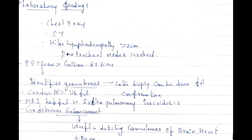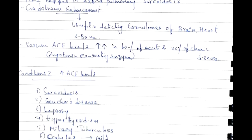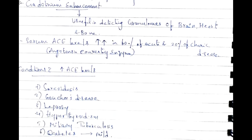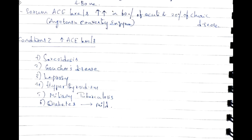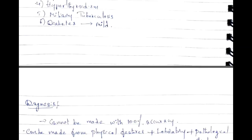Laboratory findings: chest X-ray and CT show hilar lymphadenopathy greater than 2 cm with paratracheal node involvement. PET scan is very useful for identifying granulomas — more useful than gallium-67 scan. Cardiac PET is useful; MRI is helpful for extra-pulmonary sarcoidosis. Gadolinium enhancement detects granulomas in brain, heart, and bone. Serum ACE (angiotensin-converting enzyme) levels are increased in 60% of acute and 20% of chronic cases. ACE levels are also elevated in Gaucher's disease, leprosy, hyperthyroidism, miliary tuberculosis, and mildly in diabetes.